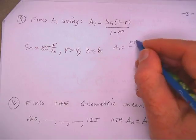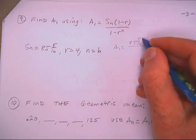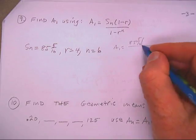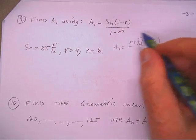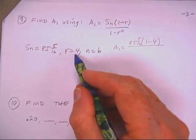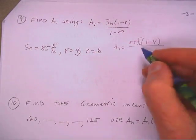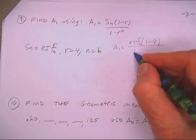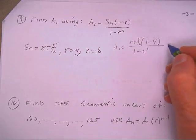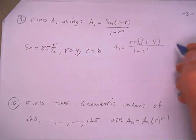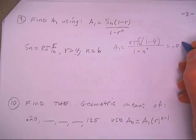So I want 85 and 5 sixteenths in the numerator, and 1 minus 4 there. R is 4. In the bottom I want 1 minus 4 to the 6th power. Calculate — we'll get 0.0625.